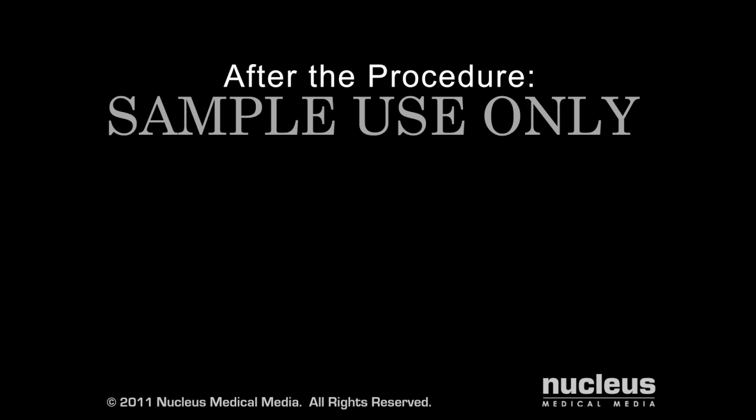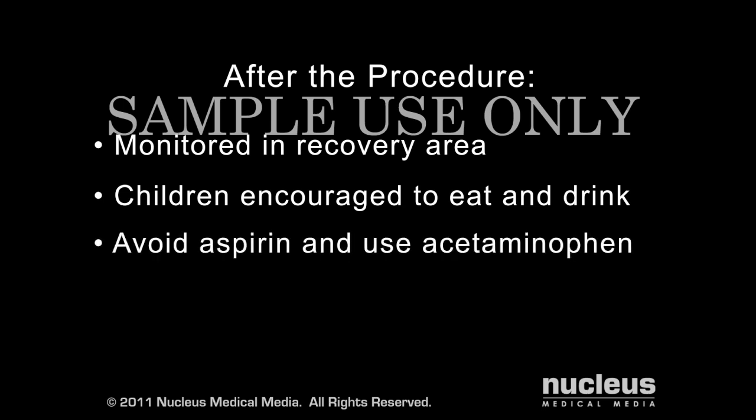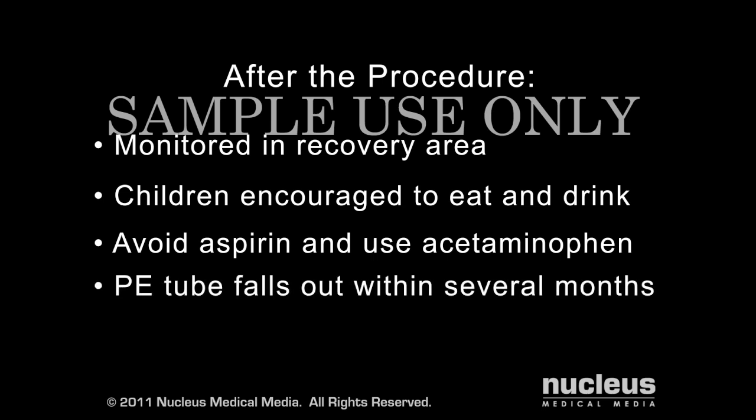After surgery, the patient will go to the recovery room for monitoring. Children may be fussy after their procedure and should be encouraged to eat and drink anything they can tolerate. If your child has pain, avoid aspirin and instead use acetaminophen at an age-specific dose. If additional pain relief is necessary, your doctor can recommend other options. The PE tube usually falls out on its own within several months.